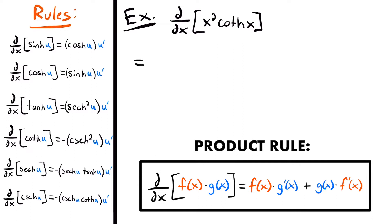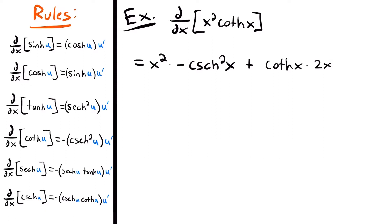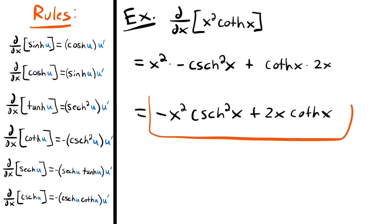Using the product rule, we have the first function x squared times the derivative of hyperbolic cotangent, which is negative hyperbolic cosecant squared x. Since the inside function is just x, the derivative is 1, so we don't multiply by anything extra. Then we add hyperbolic cotangent times the derivative of x squared. Using the power rule, the derivative of x squared is 2x. Simplifying: negative x squared times hyperbolic cosecant squared x plus 2x times hyperbolic cotangent of x.